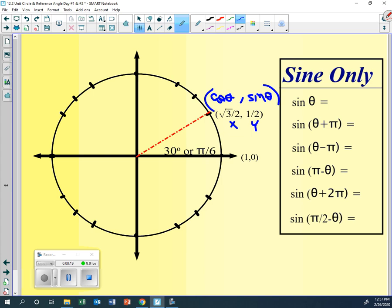So just looking at this coordinate here at 30 degrees, what is the sine of theta equal to? Which one? It's the y, one half. So write one half for that.